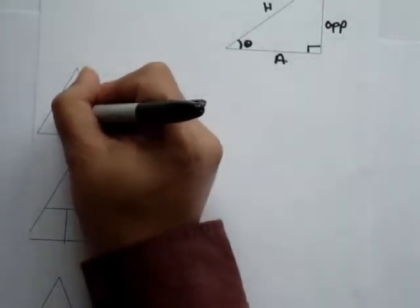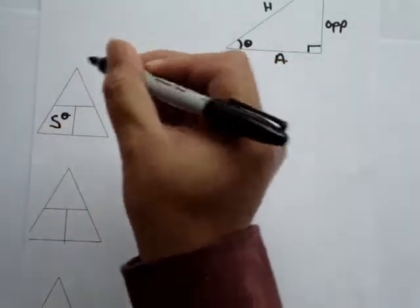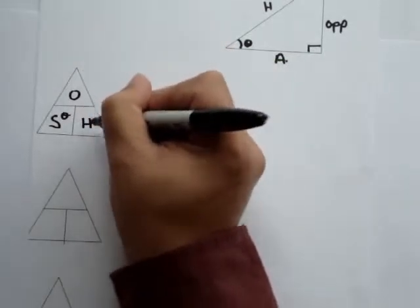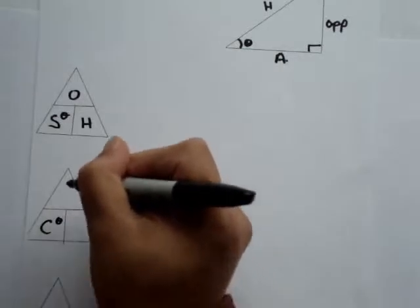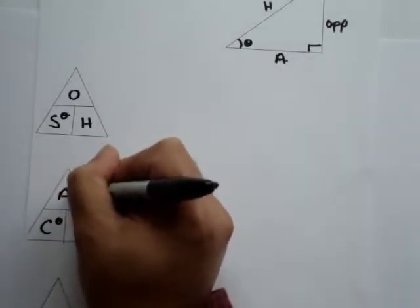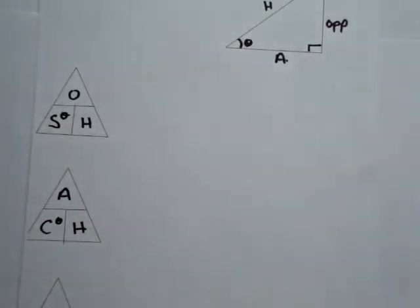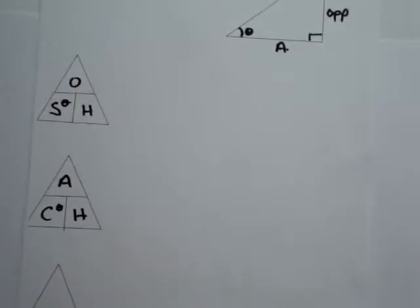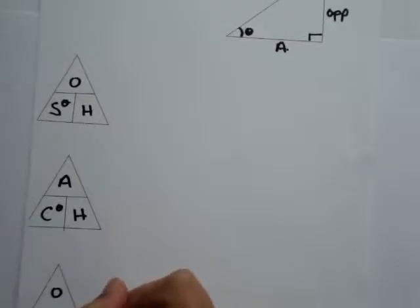The first one for sine: sine theta equals opposite over hypotenuse. For cosine: cosine theta equals adjacent over hypotenuse. And for tangent: tangent theta equals opposite over adjacent.